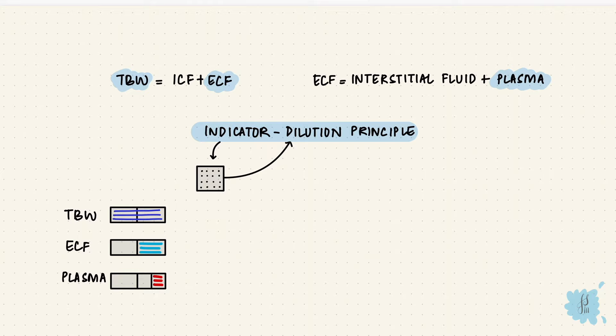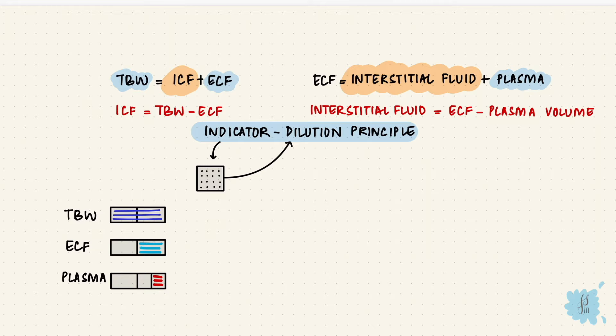The interstitial fluid and the intracellular fluid are calculated indirectly. The ICF is the total body water minus the ECF, and the interstitial fluid is the ECF minus the plasma volume. If we have the plasma volume and the hematocrit, then we can calculate the blood volume — that's the plasma volume divided by one minus the hematocrit.